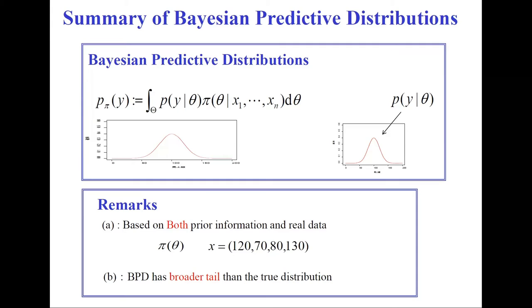The second remark: usually, the Bayesian predictive distribution has a broader tail than the true distribution, which is a theoretically very attractive property. This broader tail reflects our uncertainty on the parameter theta.